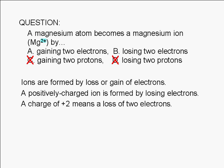It is formed when a magnesium atom loses two electrons. The correct answer is B.